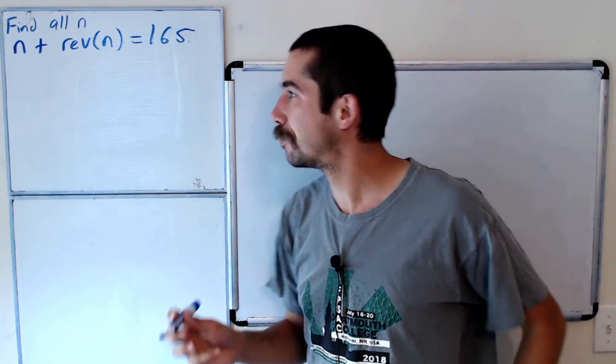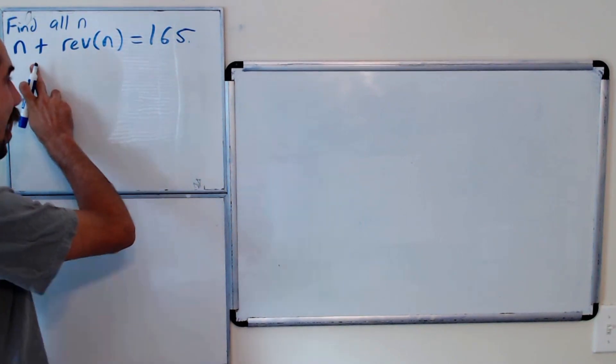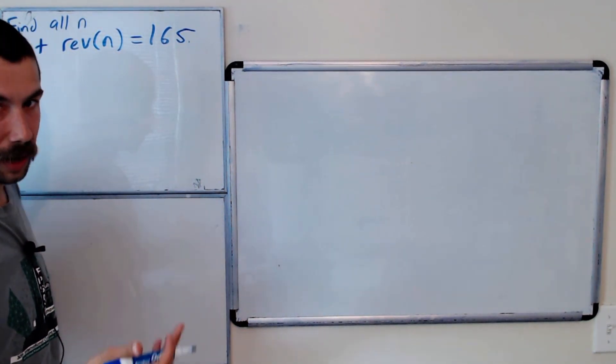Or you can just watch me solve it. The first thing we're going to show is that n cannot be a three-digit number.